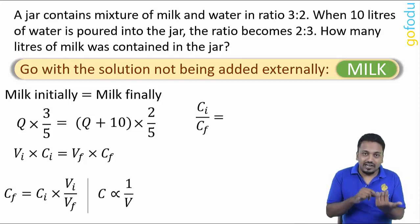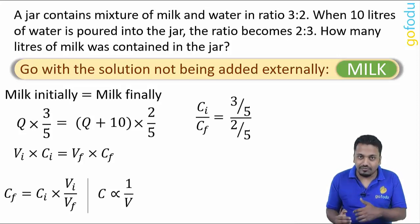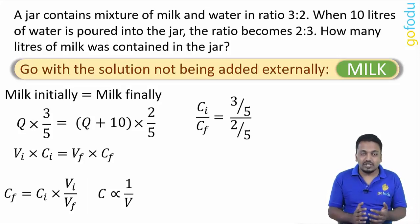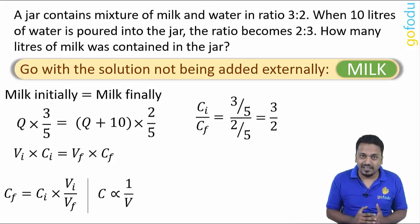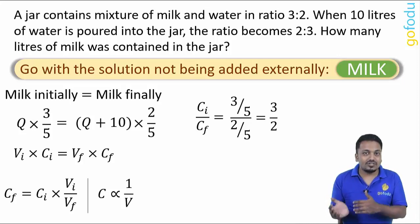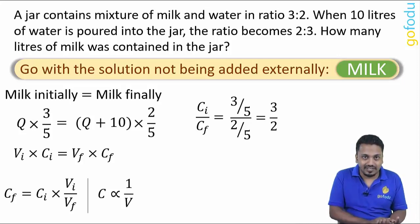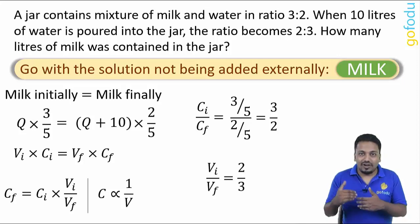Ratio of initial and final milk proportion - here initial milk proportion is 3/5 and final is 2/5. Ratio is 3:2. So ratio of volume of mixture should be inverse of this ratio. Ratio of initial volume to final volume will be 2:3.